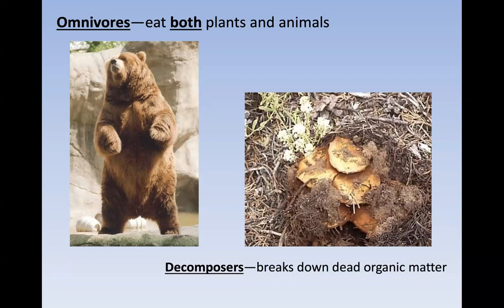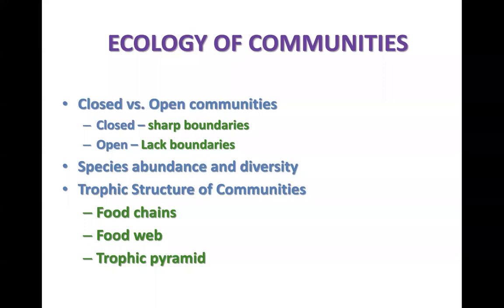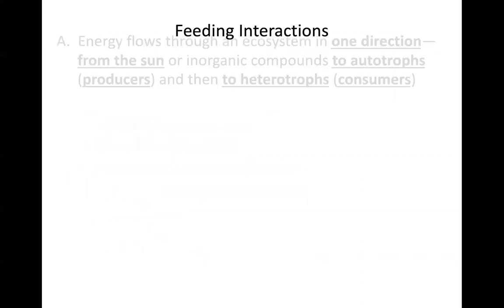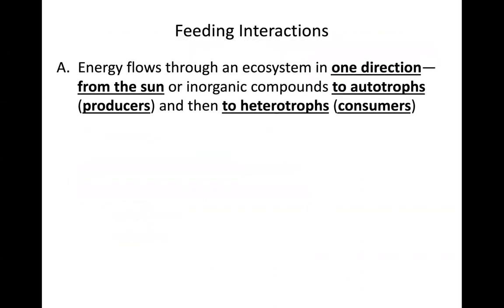Each level of consumerism becomes a source of food for the trophic level below it. We'll look at that when we identify our primary, secondary, tertiary, and quaternary consumers. As we consider the ecology of communities, where we have different populations together, we can refer to these communities as either open or closed. We can also look at the structure of these communities in terms of the food chain and food web, and look at trophic pyramids. When thinking about this flow of energy and looking at interactions between organisms in their environment, we must first consider energy flow.